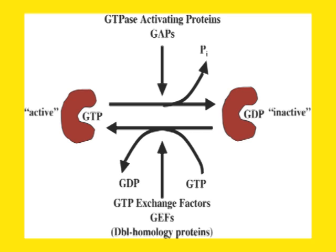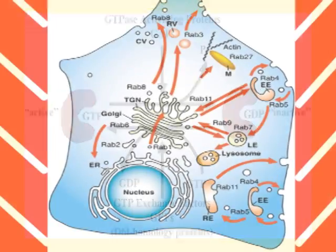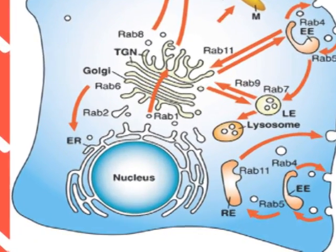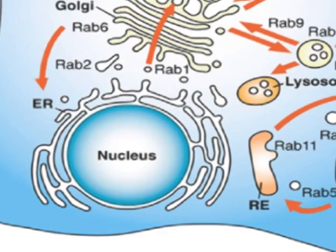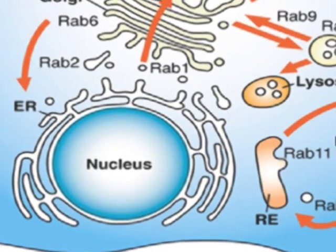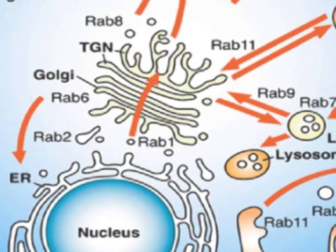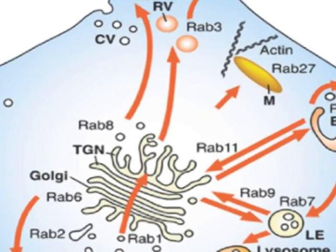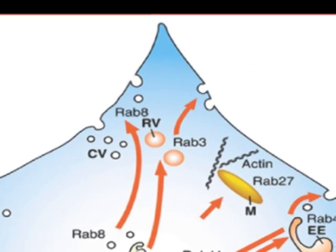GTP binding proteins act as switches in signaling pathways which regulate functions in other proteins. The proteins bind to a vesicle and target the vesicle to its needed position in the cell. RAB proteins, in particular, target vesicles from either the ER to the Golgi or from the Golgi to the outside of the cell.